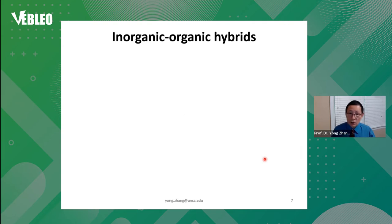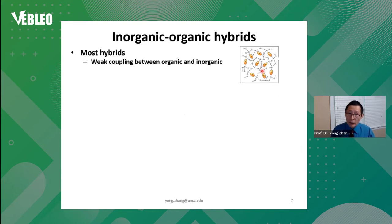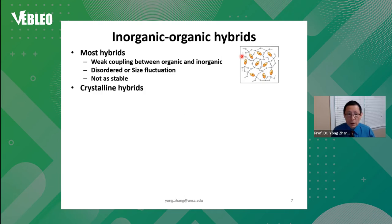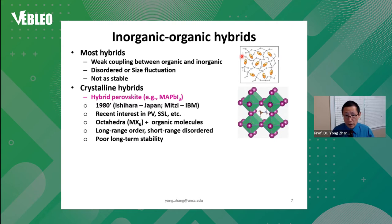Let's look at the inorganic-organic hybrids. For most hybrids, they normally involve very weak coupling between the molecules and the inorganic components, tend to be disordered, and typically are less stable than inorganic materials. There are a few examples of hybrids you can consider as crystals — for instance, hybrid perovskite, which is a very popular material showing great potential for solar cells and LED applications.